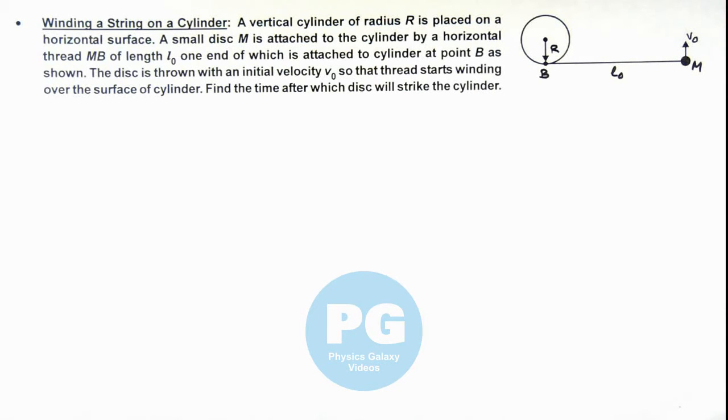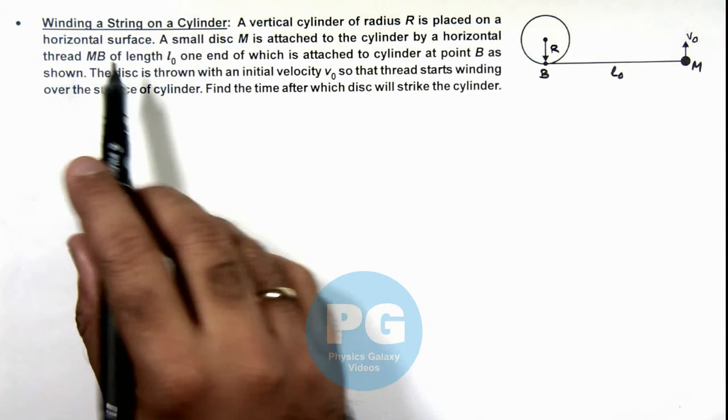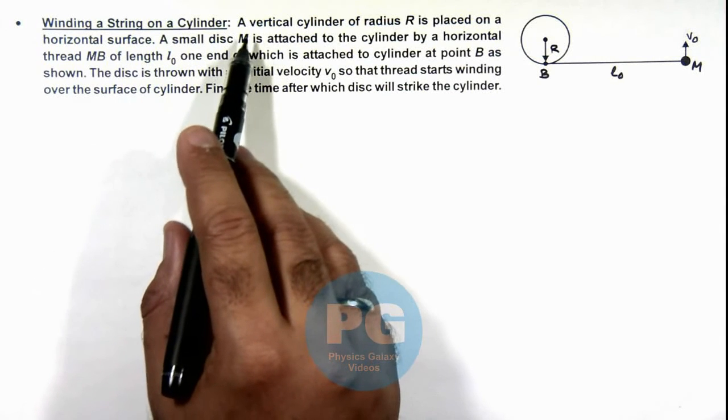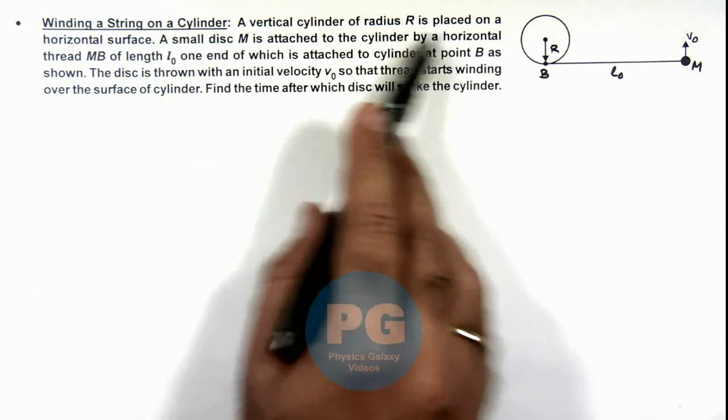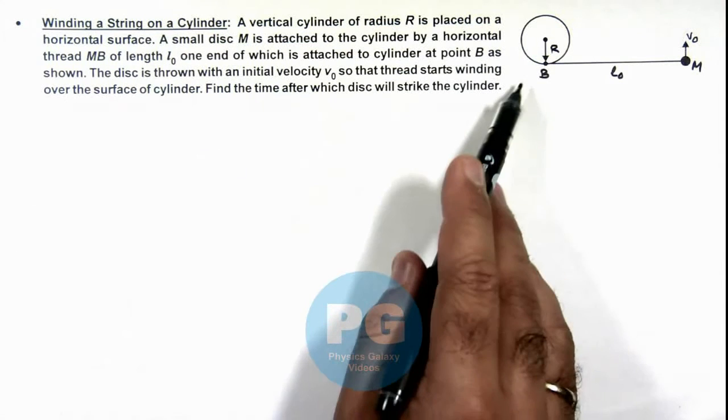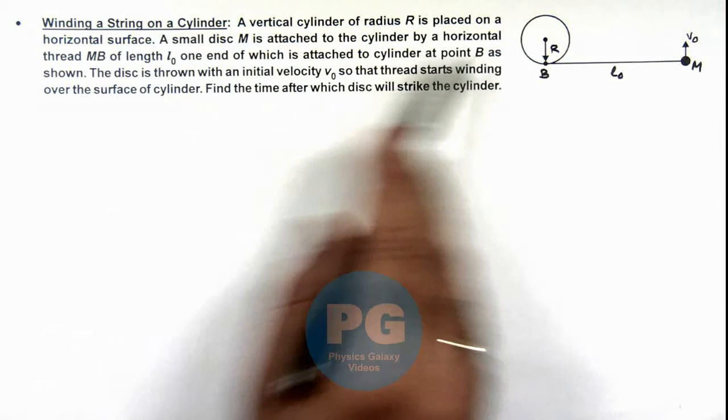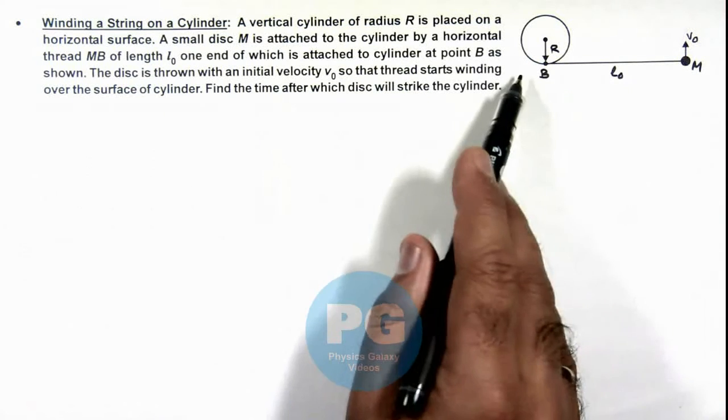In this illustration, we'll discuss winding of a string on a cylinder. Here, we are given that a vertical cylinder of radius R is placed on a horizontal surface, and a small disc M is attached to the cylinder by a horizontal thread MB of length L₀.